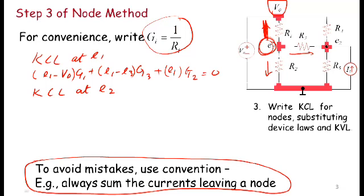All right, so to do a KCL at E2, let's start with the current leaving this node. Remember, my usual habit is to sum the nodes leaving a node.